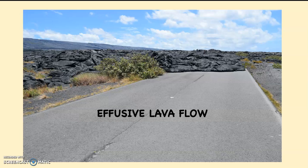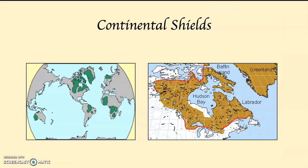The continental shields are the areas where the crust and rocks are the oldest. If you look at both of these maps — first the one on the left — the green indicates the continental shields, the oldest parts of the crust. Then looking to the right, you can see the area around Hudson Bay that includes southern Greenland. This is actually the oldest part of the crust, at least as far as anybody knows today.